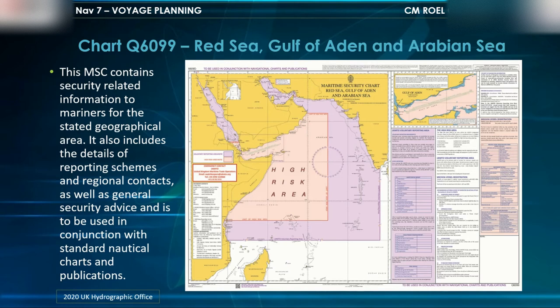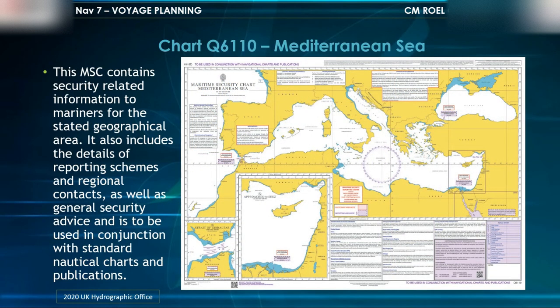MSC Q6099 contains security-related information for mariners for the stated geographical area. It includes details of reporting schemes and regional contacts, as well as general security advice, and is to be used in conjunction with standard nautical charts and publications. Chart Q6110, Mediterranean Sea, similarly contains security-related information including details of reporting schemes, regional contacts, and general security advice.